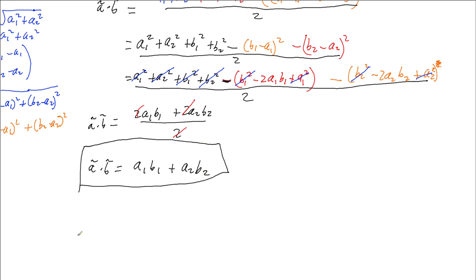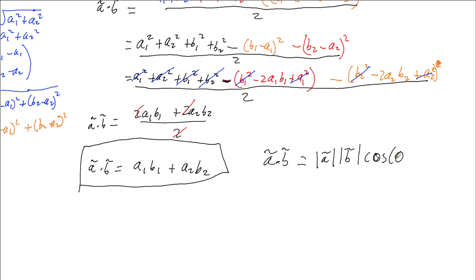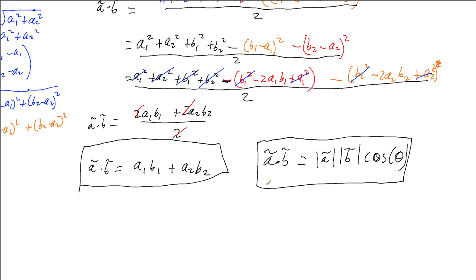And that is it. The dot product in component form is simply A1B1 plus A2B2 — the product of the corresponding components summed together. And if the vectors are in polar form, we use our original definition: the magnitudes of A and B multiplied by cos theta, where theta is the angle between them. Those are our two rules for the dot product.